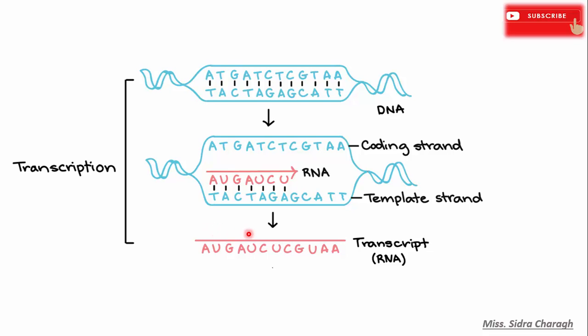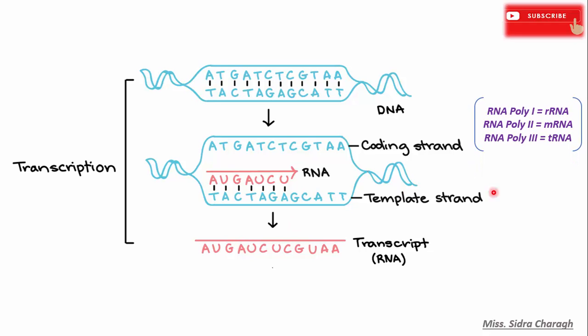The RNA polymerase enzyme synthesizes RNA from the 5' to the 3' direction. In prokaryotes, there is only one type of RNA polymerase enzyme, which is responsible for the synthesis of all three types of RNA: messenger RNA, transfer RNA, and ribosomal RNA.